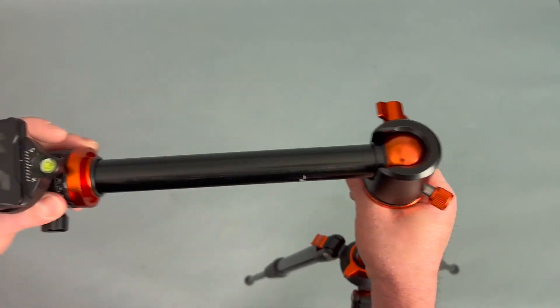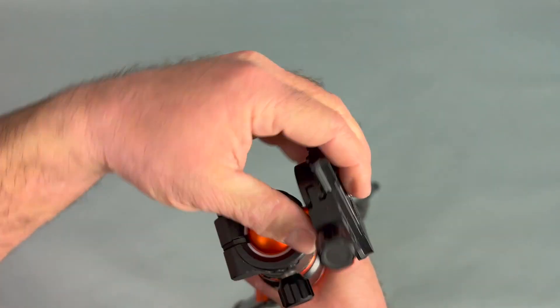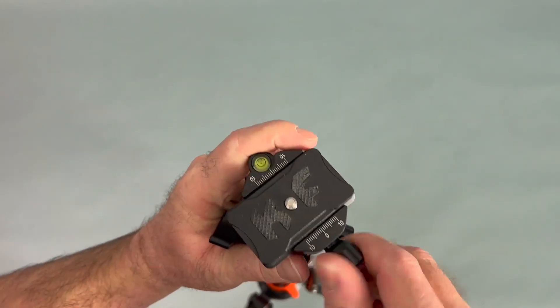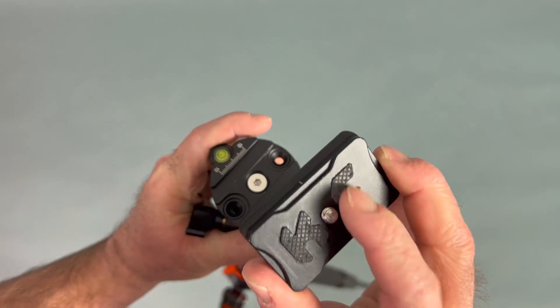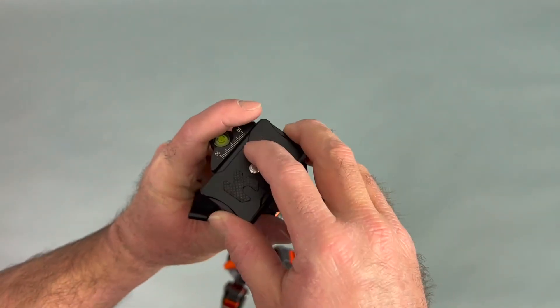You also get a good quality tripod plate with good threaded screws. You can unscrew here, open this up—good grippy rubber on it, nice thumb screw on the bottom to tighten things up.